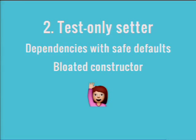The test-only setter — you want to use that when you have dependencies with safe defaults. An example would be a logger, a translator, a URL generator. These are objects where it's very unlikely we're going to have more than one instance of in a Drupal request. It's also a good idea when you have a really bloated constructor. If you have a constructor with nine parameters in it, which we do, the ones that have safe defaults you might just move to test-only setters — because the only reason you're injecting them is that you want to be able to test your object. If you can test it through a setter and it's really just an application-level dependency, feel free to get it out of your constructor.